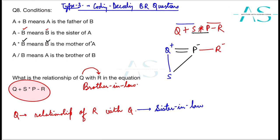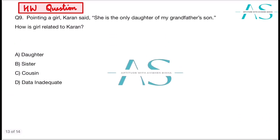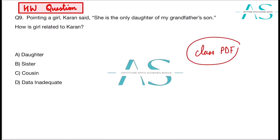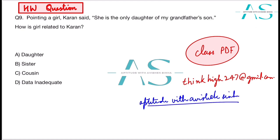This covers Part 1 of blood relation questions. You can find the correct options in the comment box. For the class PDF of any lecture, you can mail us at thinkhi247 or find us on Instagram at 'Aptitude with Avisek Sinna' — the same name as the YouTube channel. Drop your mail in our inbox and we'll send you the files. Thank you, take care, bye bye, and happy learning to everyone.